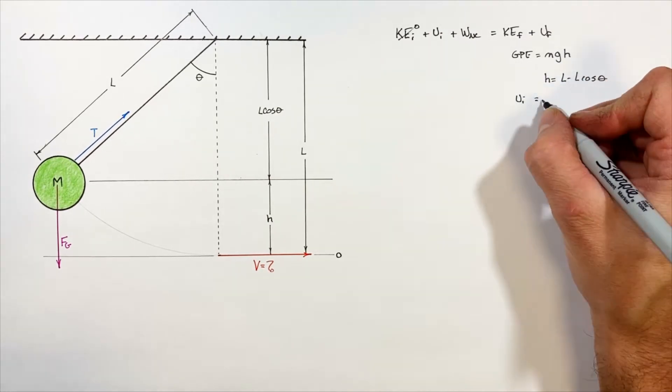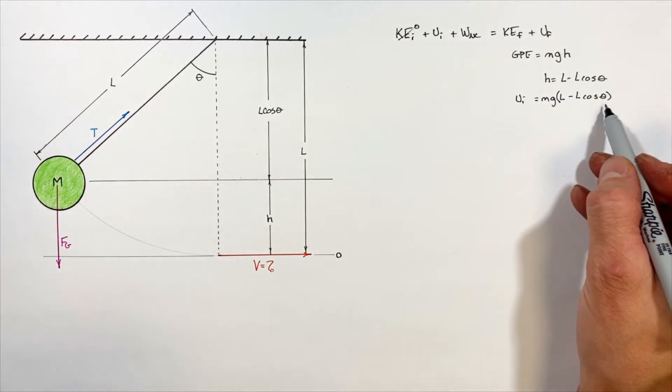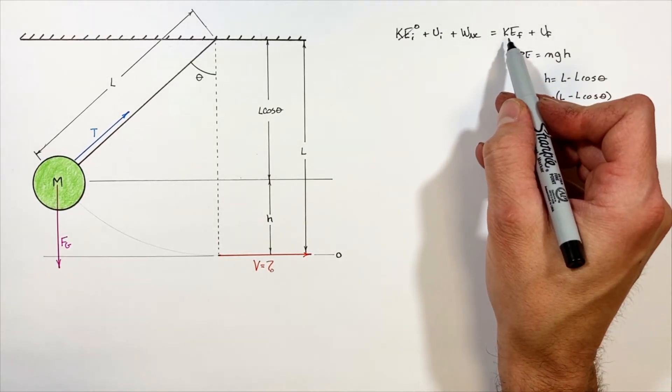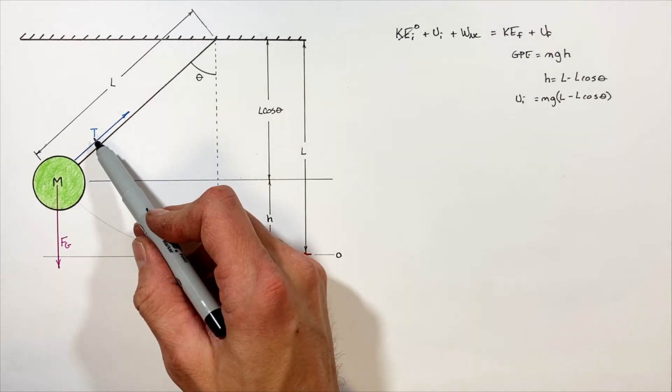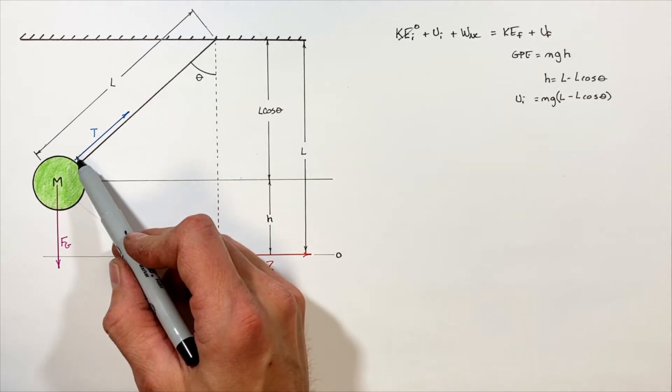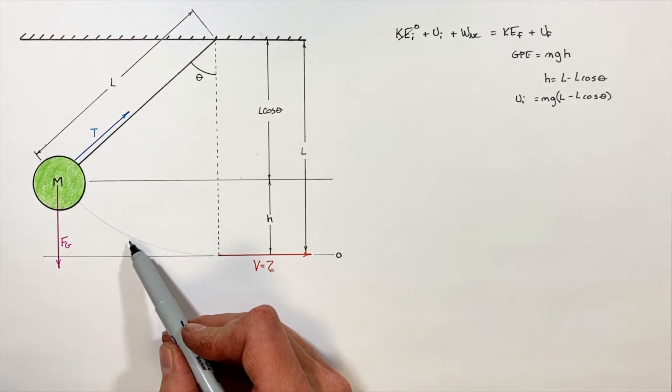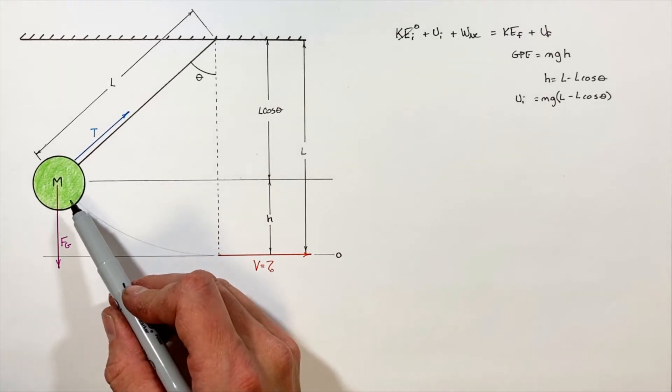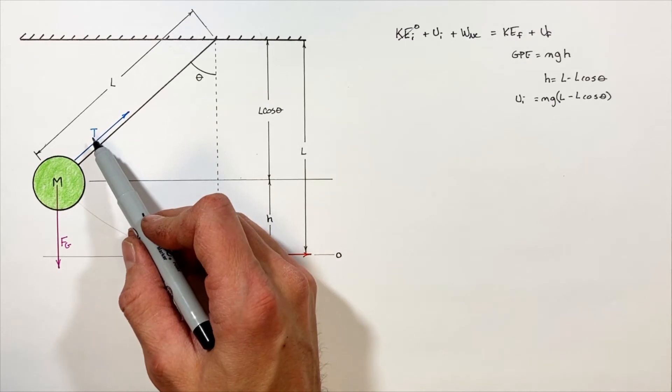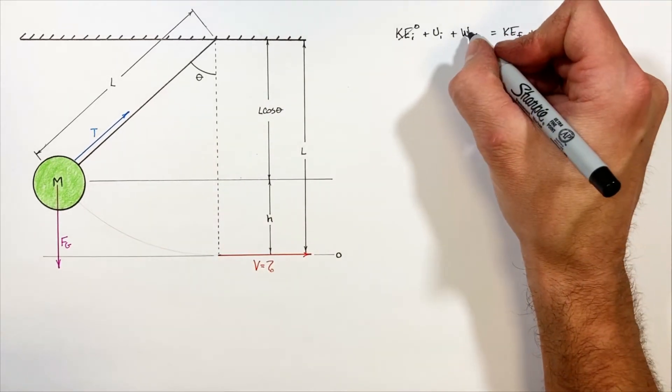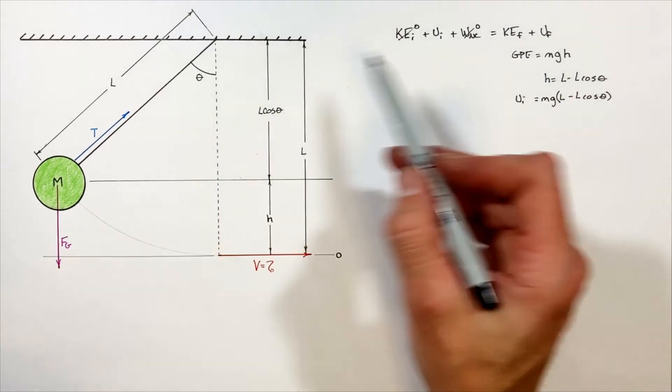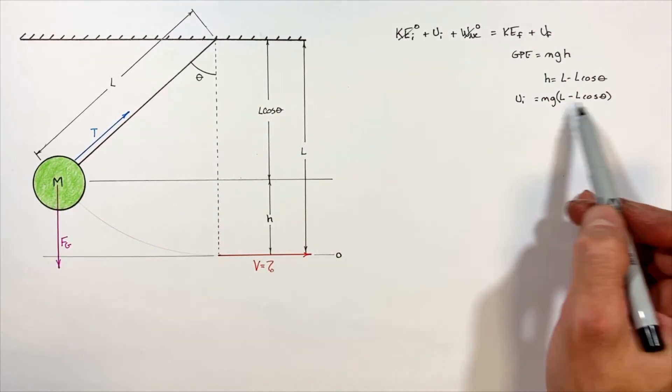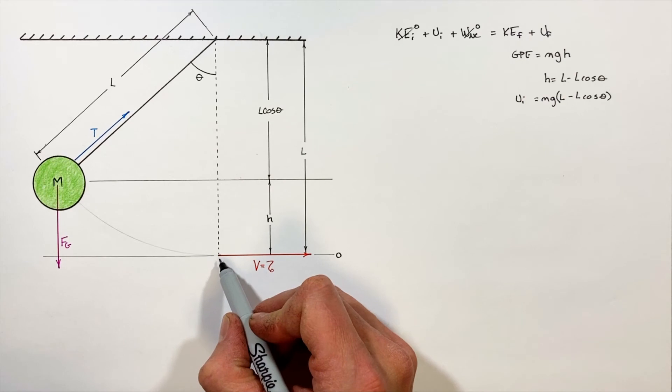Now moving on to our other terms in this problem, there are two forces: gravity and the tension in the string. But because the tension in the string is at a right angle to the direction which the mass is traveling at any point, the tension is never going to do any work. Therefore, there is no non-conservative work in this problem.